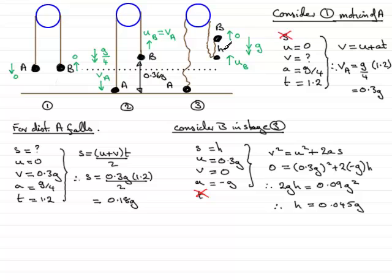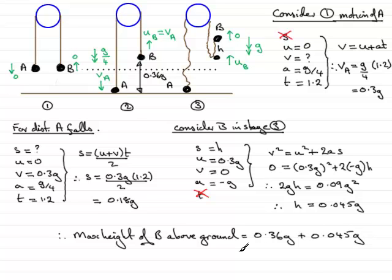So in order to find the total height now that B is above the ground, what we need to do is add this height to the 0.36G. So therefore, to get the maximum height that B is above the ground, maximum height of B above ground, is going to equal then 0.36G plus this height here, 0.045G. And that essentially gives us 0.405G. And if we enter G as 9.8 in your calculator, 0.405 times 9.8 gives 3.969, and that will be meters.